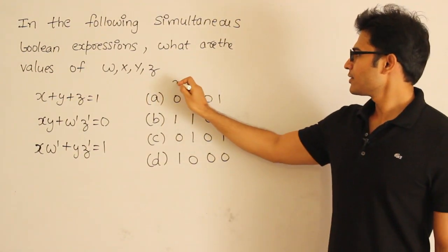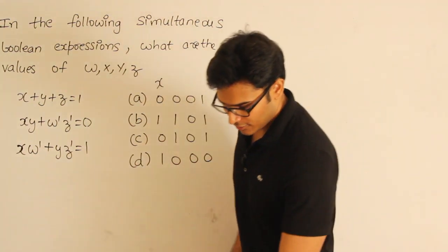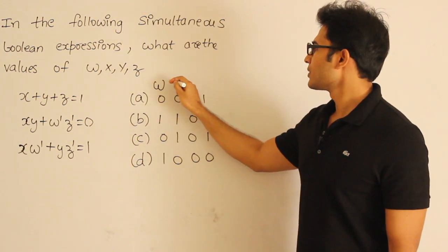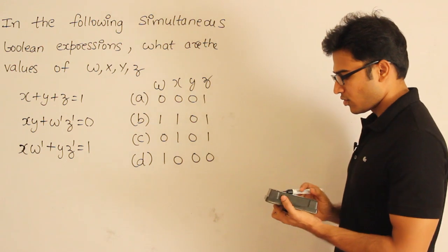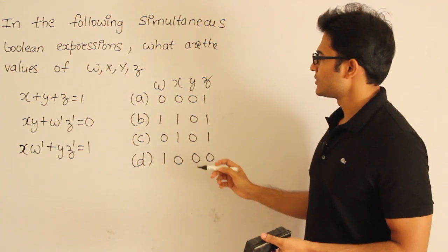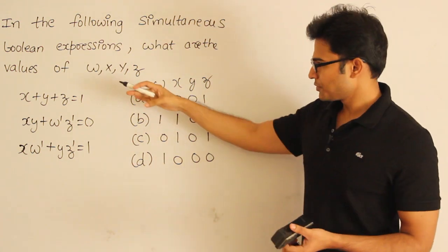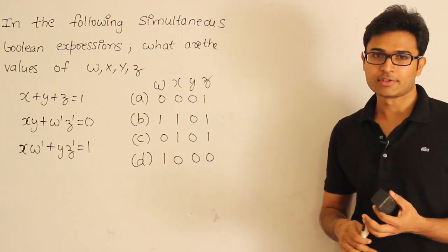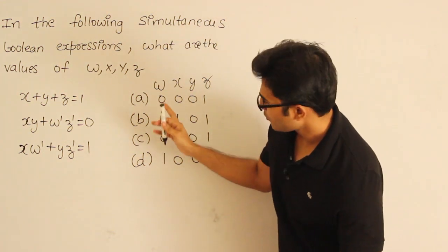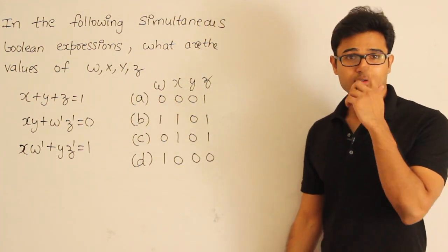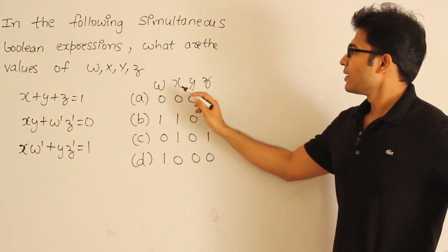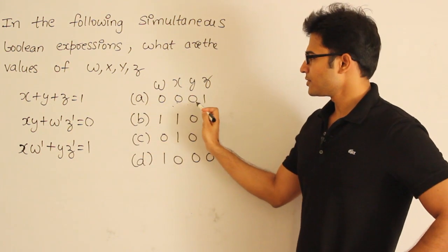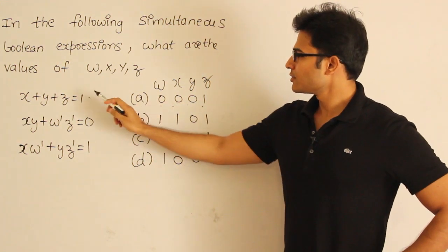So the first candidate is x, w, x, y, z. The input values w, x, y, z are given. You take each equation and substitute the values there to verify. So w, x, y, z — if I put this value, x plus y plus z gives 1. It is fine; the first equation is verifying.